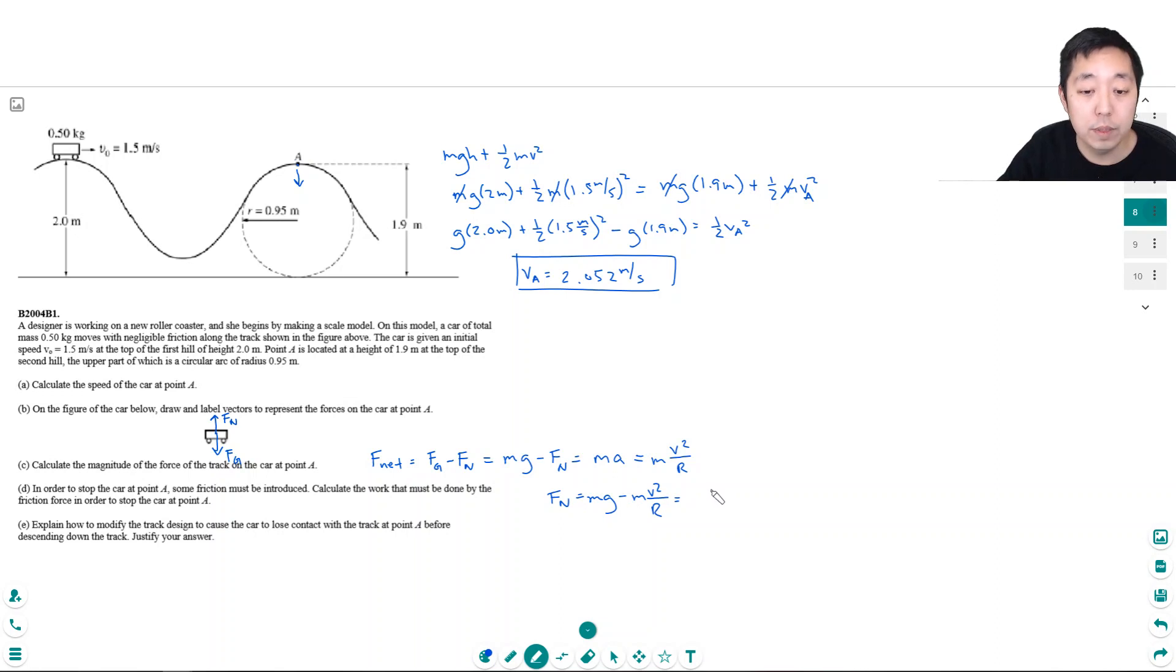What is m? It is 0.5 kilograms times 9.8 meters per second squared minus 0.5 kilograms. Its velocity at A we calculated before. It's 2.052 meters per second squared divided by the radius 0.95 meters.